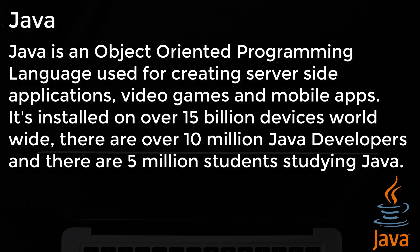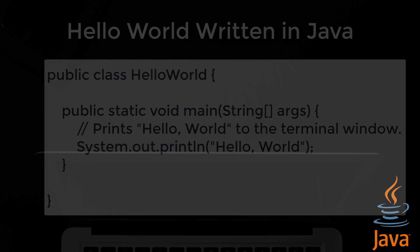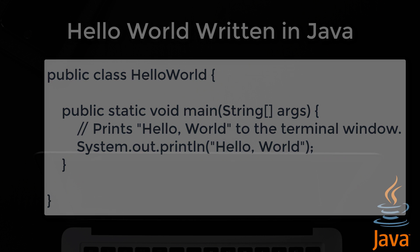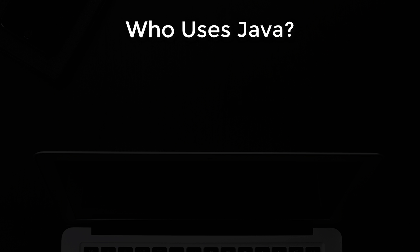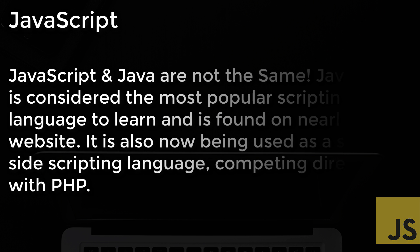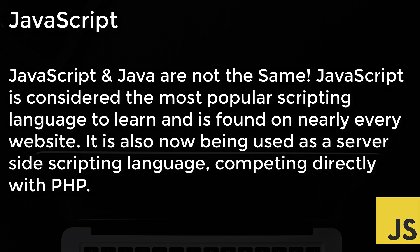Number 2: Java. Java is an object-oriented programming language used for creating server-side applications, video games, and mobile apps. It's installed on over 15 billion devices worldwide, there are over 10 million Java developers, and there are currently 5 million students studying Java. This is how you write hello world in Java. Companies that use it include Twitter, Amazon, Facebook, and LinkedIn, just to name a few.